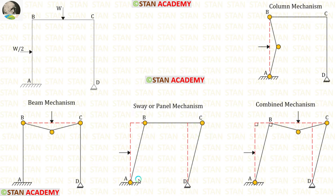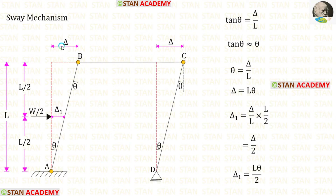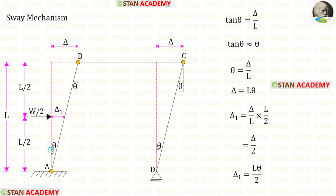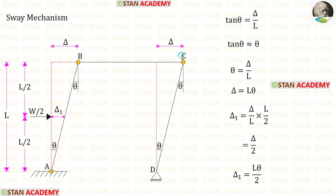So there are three plastic hinges in total. Let us keep the sway displacement as δ and the displacement on the right of the point load as δ1. Let us keep the angle at point A as θ, so the angle at point B also should be θ. In this frame both columns have the same height L, so the angles at points C and D will also be θ.